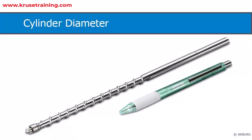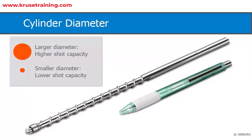To determine the shot capacity of a plasticizing cylinder, you need to consider the following. Cylinder diameter: the diameter of the plasticizing cylinder plays a significant role in determining the shot capacity. Larger diameter cylinders can hold more plastic, allowing for a higher shot capacity.